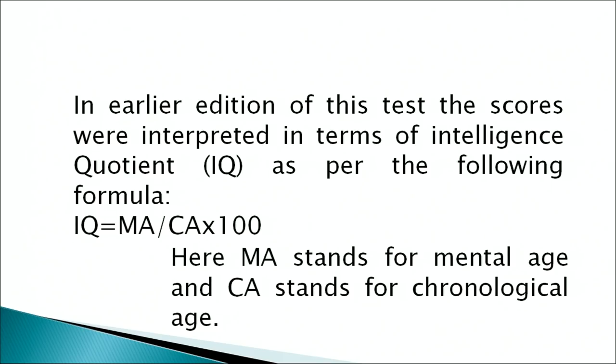In the earlier editions of this test, scores were interpreted in terms of intelligence quotient. The formula for measuring IQ is: IQ = (MA / CA) × 100, where MA stands for the mental age of the individual and CA stands for the chronological age of the individual.